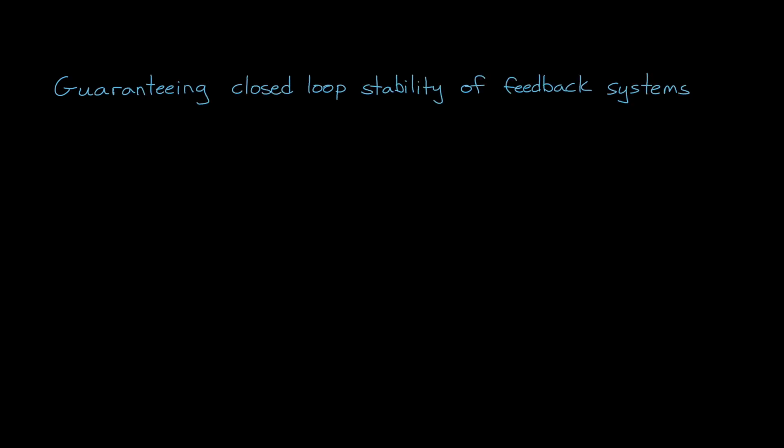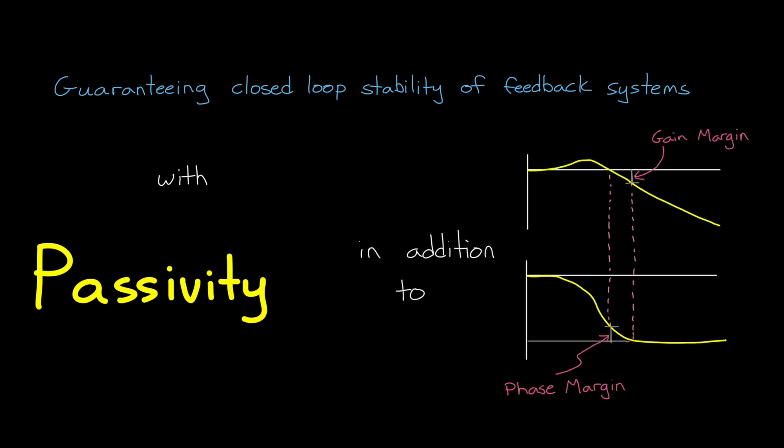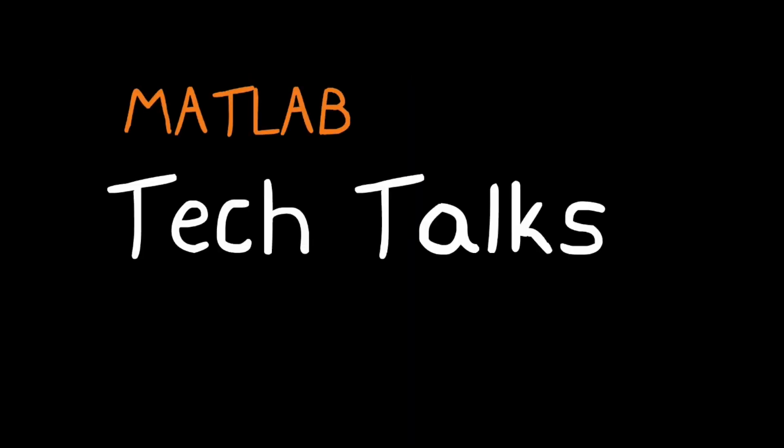In this video, we're going to talk about guaranteeing closed-loop stability of feedback systems. The main purpose is to introduce the idea of passivity and get you thinking about other ways to assess stability of systems than just looking at gain and phase margin. I'm Brian, and welcome to a MATLAB Tech Talk.